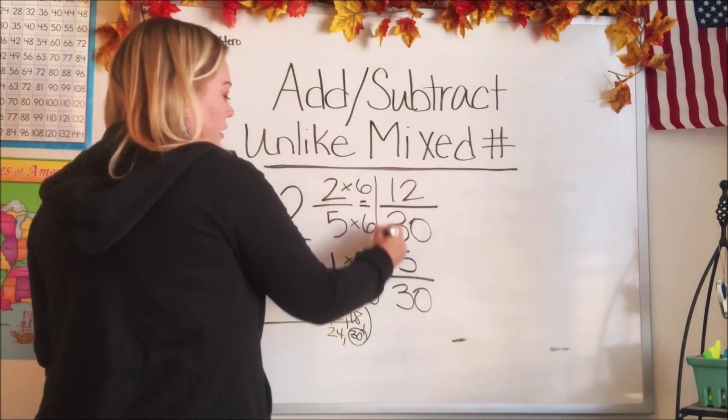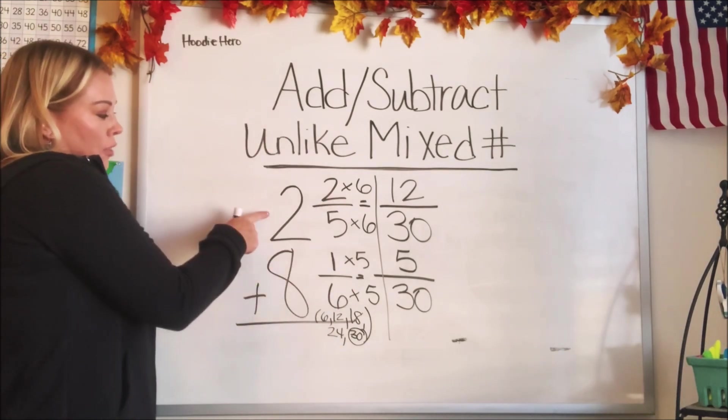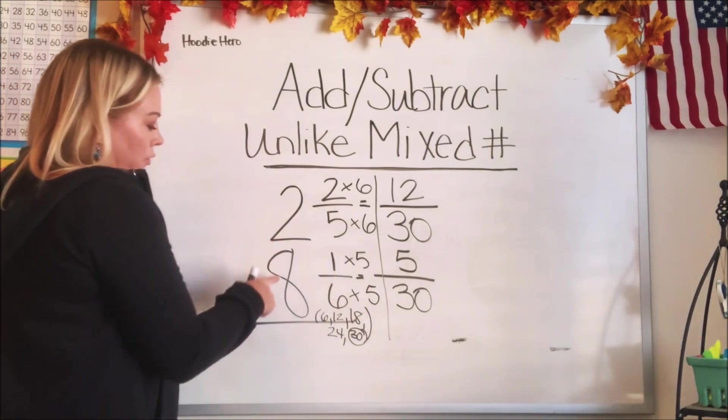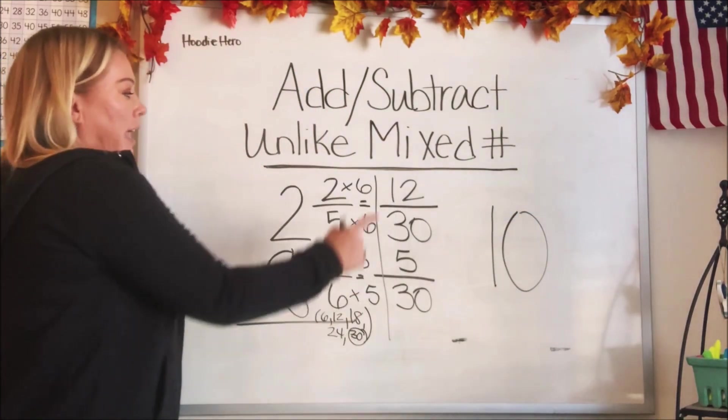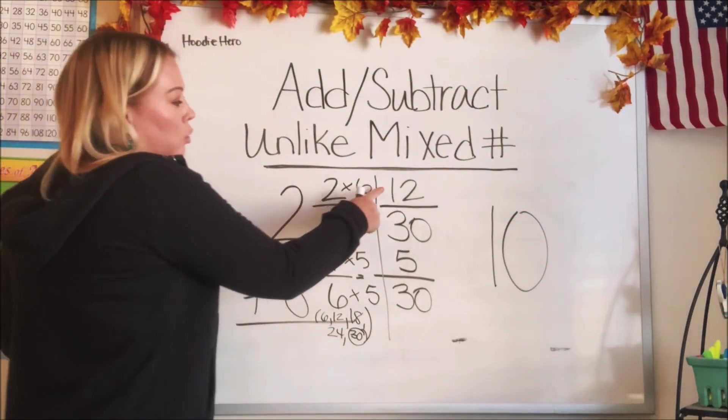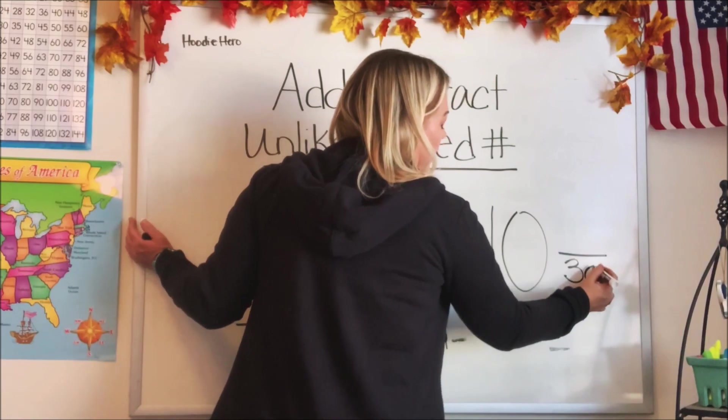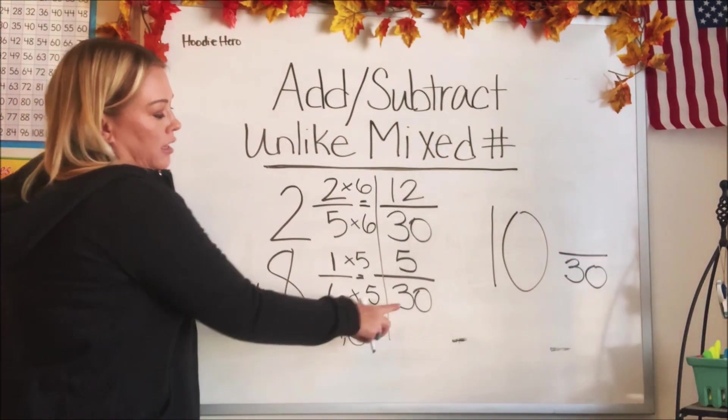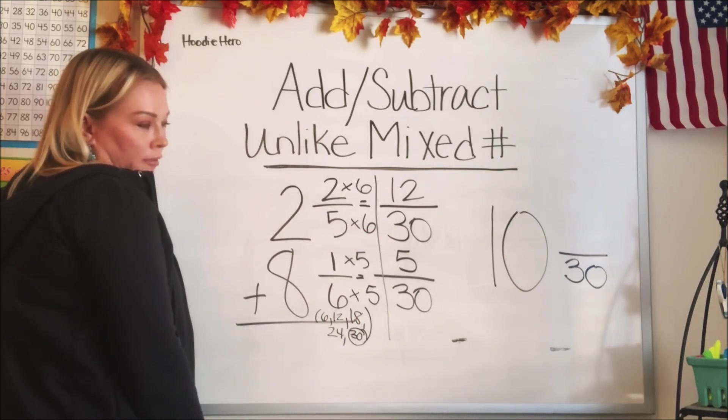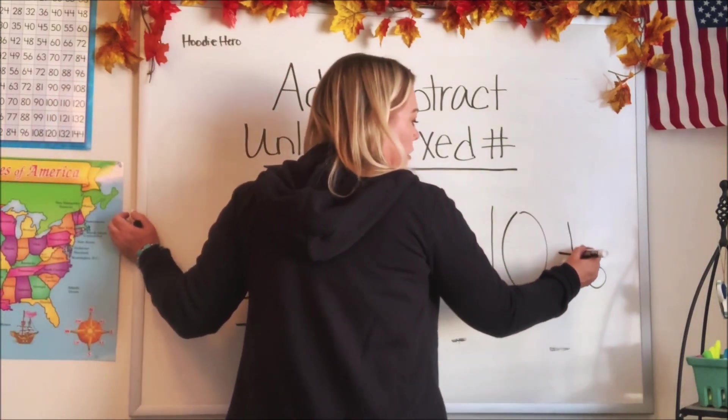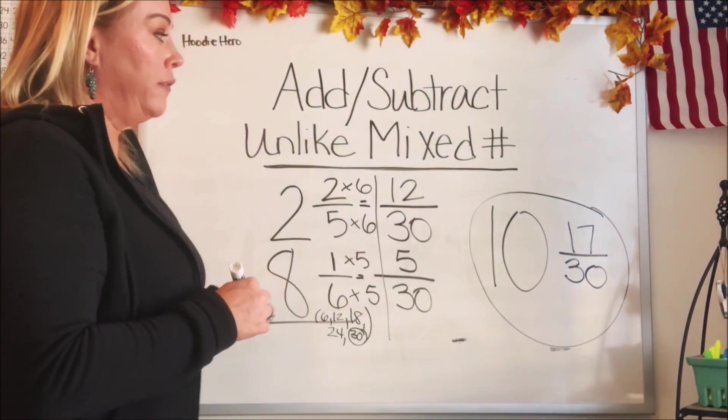Now that we're all set, we've got our new fractions that are like, we can simply add straight down. Let's start with the whole numbers. 2 and 8 is 10. Our answer in the whole number is going to be 10. Let's do the fraction. Now we're adding again, 12 plus 5. I was just going to write the denominator because that never changes. It always stays the same. So we're just going to put 30 over. Now let's add the numerator. So 12 and 5 is 17. There's your number.